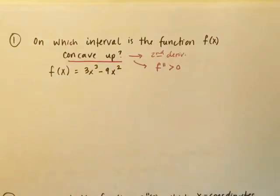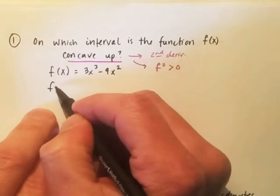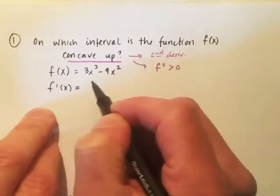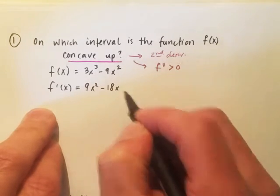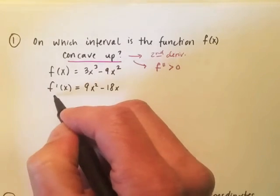We're going to go through this process of actually finding f double prime by first finding f prime using the power rule. So bring down, subtract, bring down, subtract. That's f prime, so now f double prime.